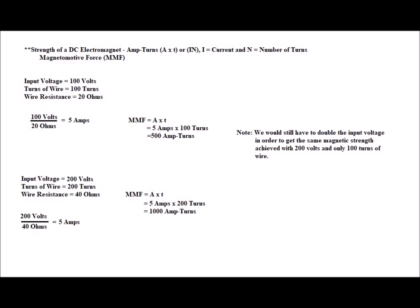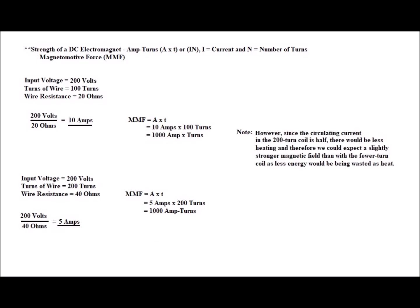Doubling the turns of wire for instance would nearly double the wire resistance and halve the current. So at least for the same voltage, the formula for magnetomotive force or amp-turns shows that if the current is halved while the turns are doubled, there will be little if any gain in actual strength.